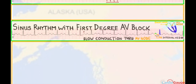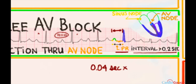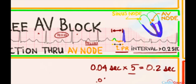Let's talk about sinus rhythm with first degree AV block. First degree AV block is when conduction is slowed through the AV node and the PR interval is longer than it would be otherwise. The PR interval goes from the very start of the P wave to the very start of the QRS. If this interval is more than 0.2 seconds — which equals five little boxes, since each little box is 0.04 seconds — that's a first degree AV block. In this case we've got approximately seven little boxes, so 0.04 times 7 equals 0.28 seconds — that's first degree AV block.